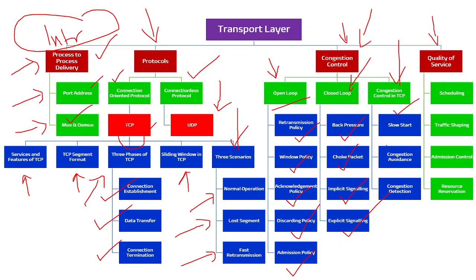Under congestion control in TCP, there are three phases: the slow start phase, congestion avoidance phase, and congestion detection phase. Finally, for quality of service, we are going to discuss scheduling — how with the help of scheduling we can maintain QoS — traffic shaping, admission control, and resource reservation techniques. Under resource reservations we are going to discuss integrated service, differentiated service, and possibly the RSVP protocol.